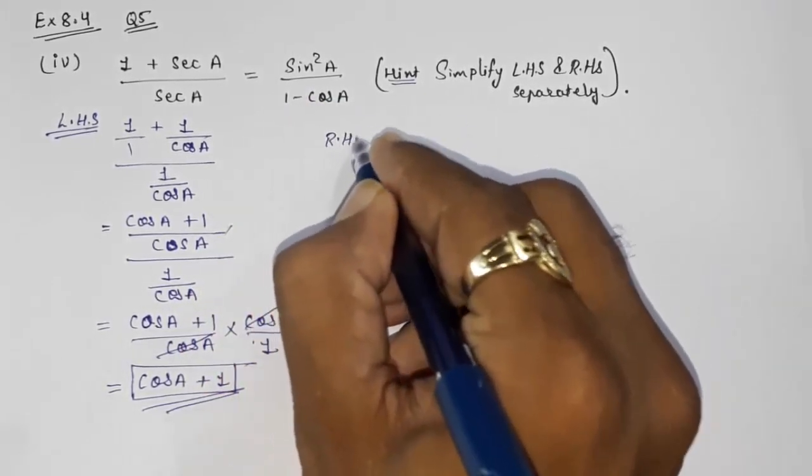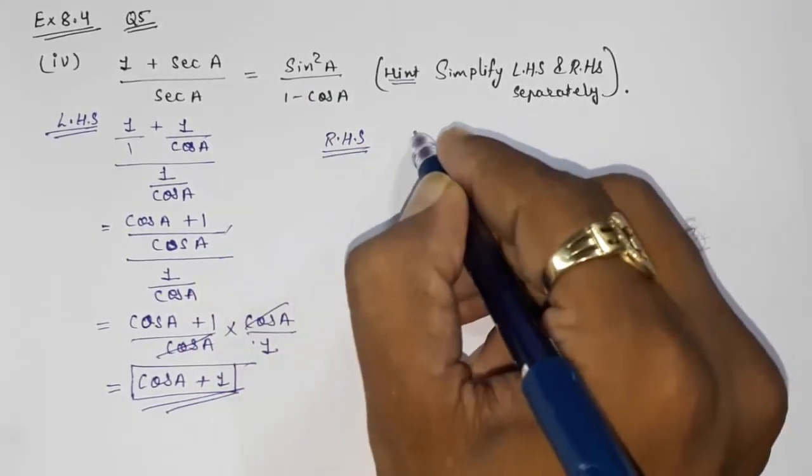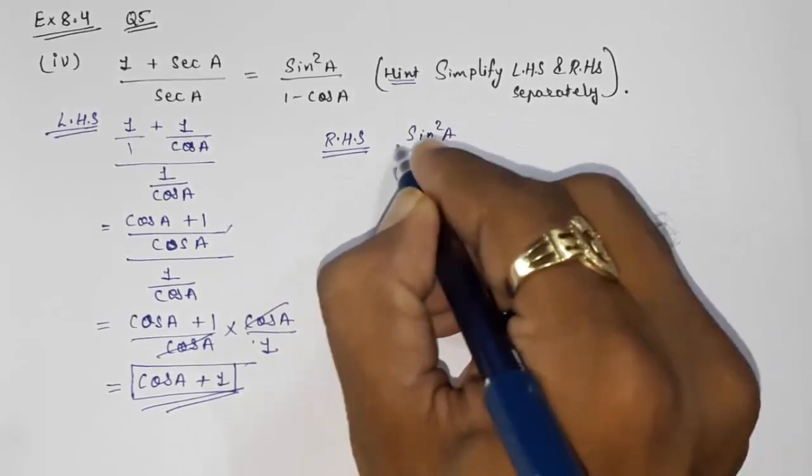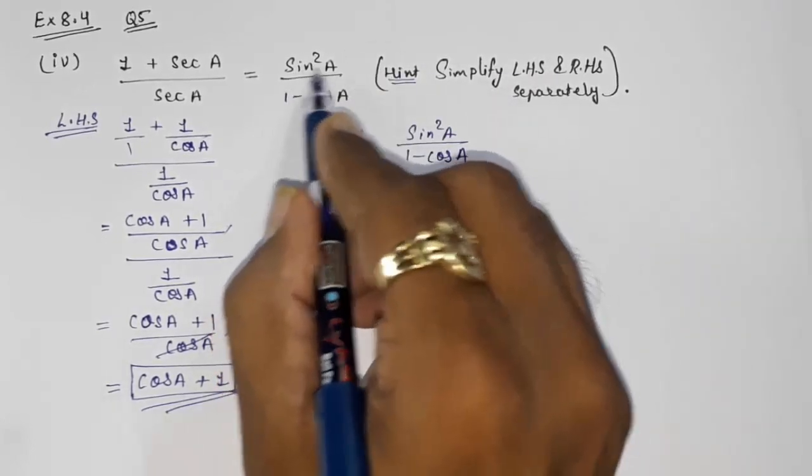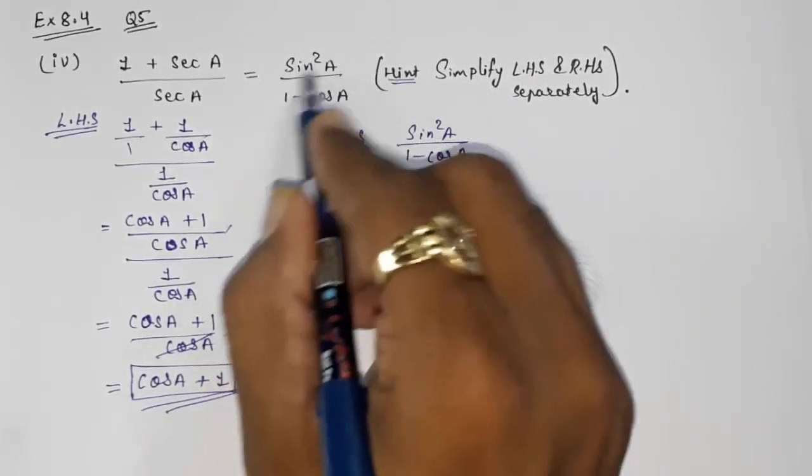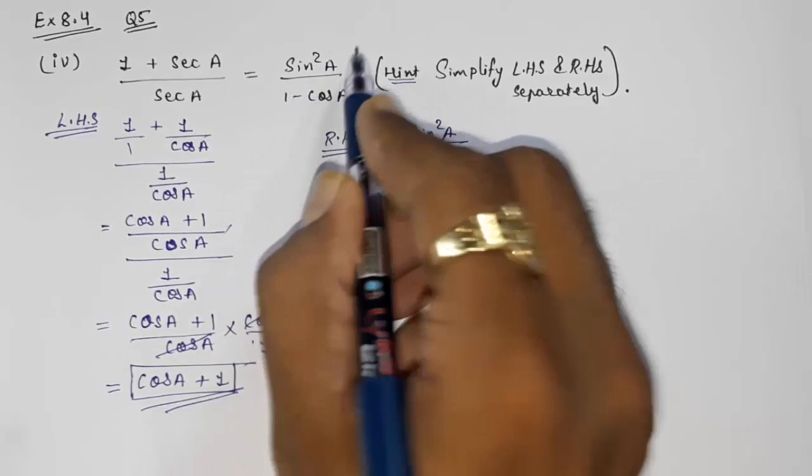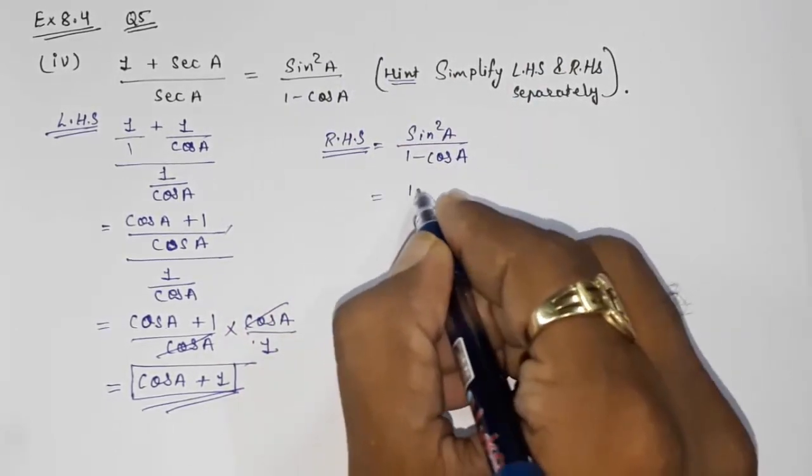I am solving here, look here, sin square A upon 1 minus cos A. So directly we can convert this sin square A. We know that sin square A is equal to 1 minus cos square A by identity.